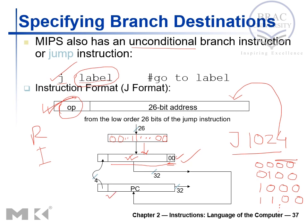We now have 28 bits, but we need 32, so we need 4 more bits. These 4 bits come from the program counter itself. The program counter currently holds the 32-bit memory address of the jump instruction. The trick is to take the most significant 4 bits (MSB) from the program counter's value and place them in the remaining field, giving us 4 bits plus 28 bits — our complete 32-bit address.